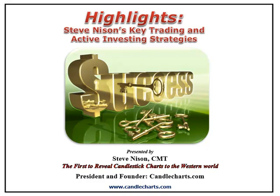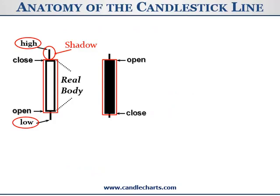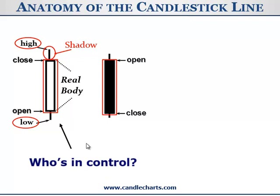One of the great things about candlesticks is every candlestick line tells a story. Here we have a white real body — that means the close is higher than the open. Some charting packages might show green instead of white. And here we have a black real body. The Japanese say the power of the market is reflected in a single candlestick. We ask ourselves: who's in control during the session? This could be an intraday session, a daily chart, or even a weekly or monthly chart. With the market opening and closing here, the bulls are in charge — and likewise, on the flip side, the bears are in charge.